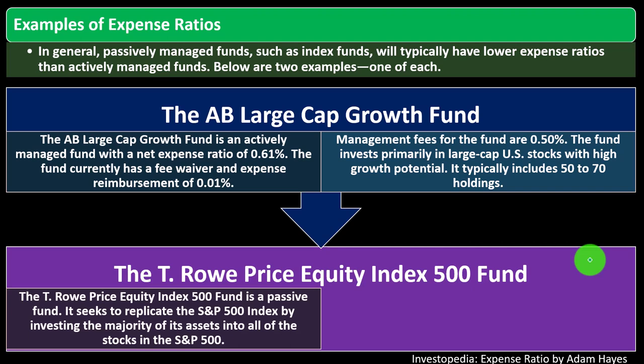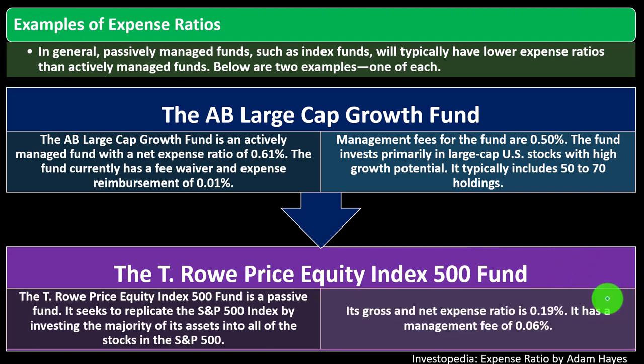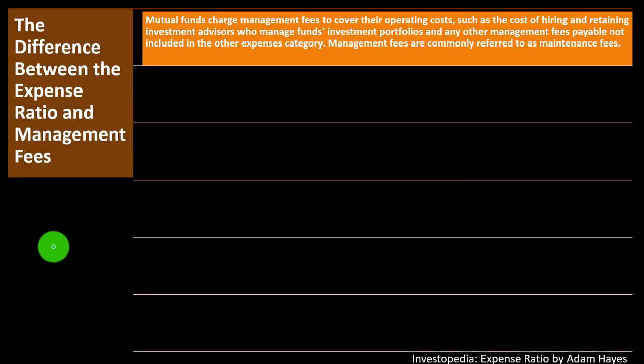The T. Rowe Price Equity Index 500 Fund is a passive fund that seeks to replicate the S&P 500, tying to an index as an average of the market. It does this by investing the majority of its assets into all of the stocks in the S&P 500. Its gross and net expense ratio is 0.19%, with a management fee of 0.06%.